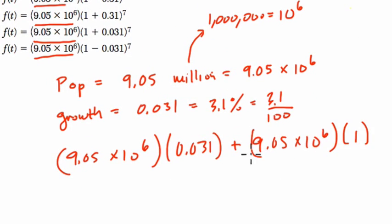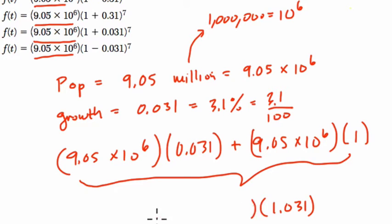But really, you can think of this combined like terms. 0.031 groups of the population plus one group of the population is the same thing as 1.031 groups of the entire population.